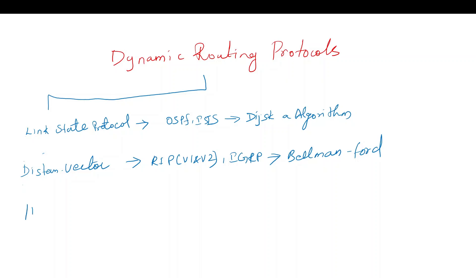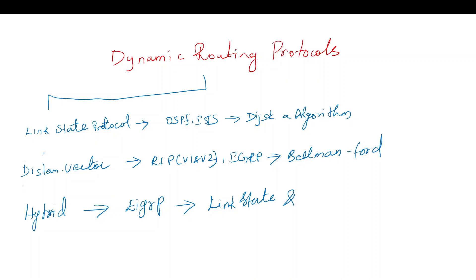Third, we have Hybrid protocols. Hybrid combines link state and distance vector. What is the combination? It is called Hybrid, and the protocol is EIGRP.